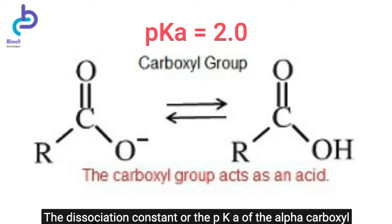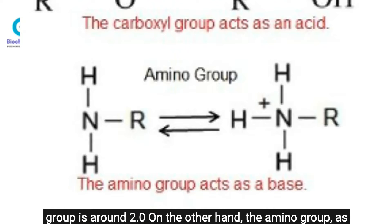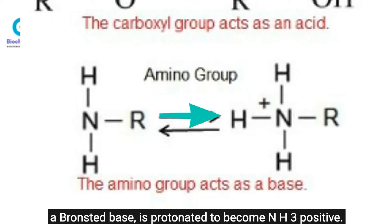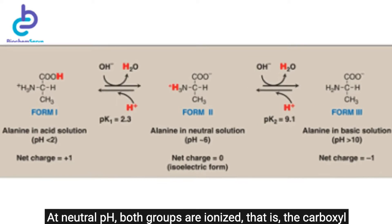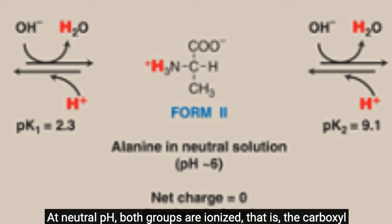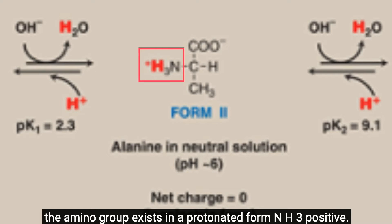The dissociation constant or pKa of the alpha-carboxyl group is around 2.0. On the other hand, the amino group, as a Bronsted base, is protonated to become NH3-positive. The pKa of the alpha-amino group is around 9.0. At neutral pH, both groups are ionized: the carboxyl group exists in the dissociated COO-negative form, while the amino group exists in the protonated NH3-positive form.